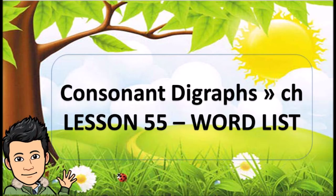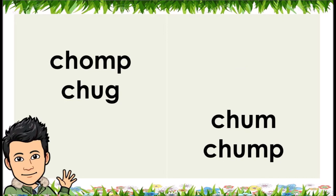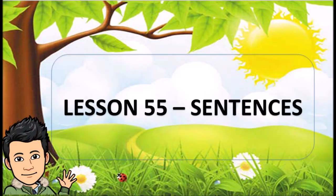Consonant Digraph CH — Lesson 55. Word List: Chep, Chat, Chant, Champ, Chet, Chest, Chess, Chin, Chip, Chimp, Chop, Chomp, Chug, Chum, Chump.